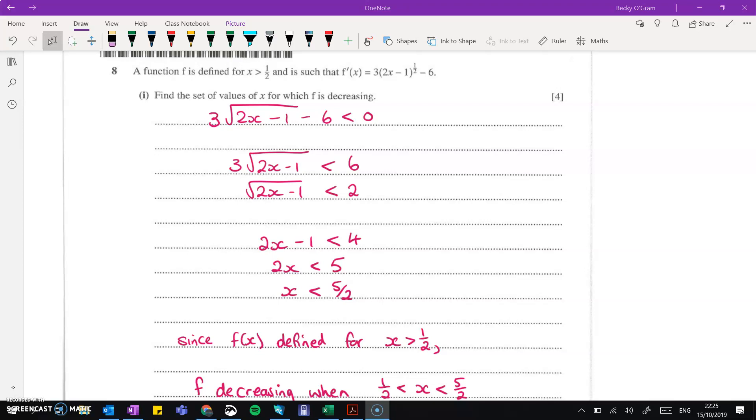Now, if the function is decreasing, it means the gradient is negative. So we take that gradient function we've been given, we make it less than 0, and we work through the solutions to that. We end up with x being less than 5 over 2.